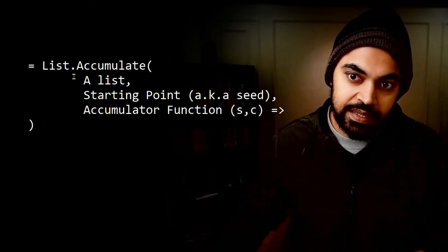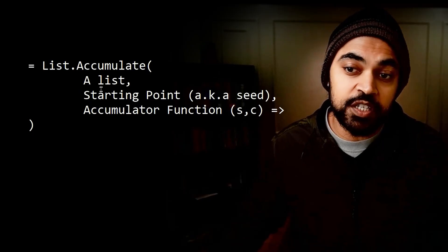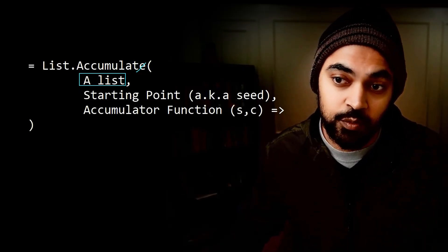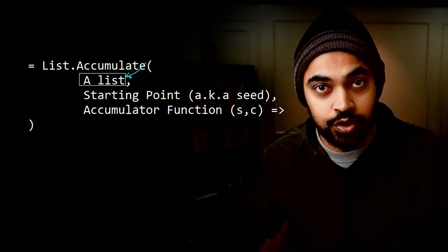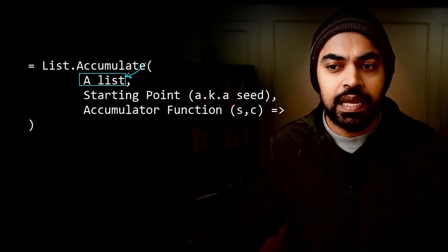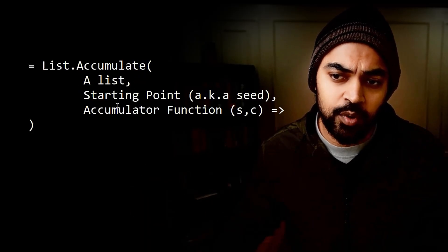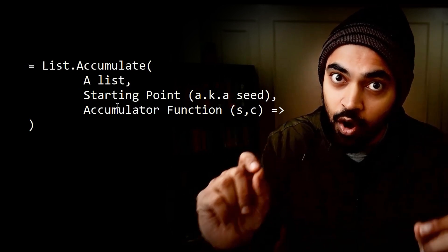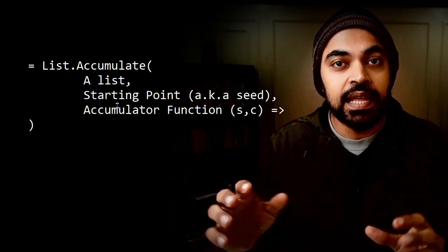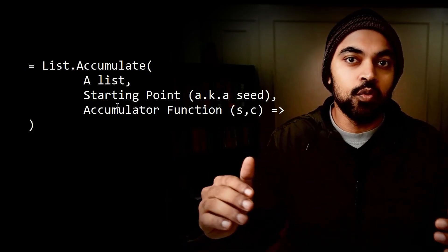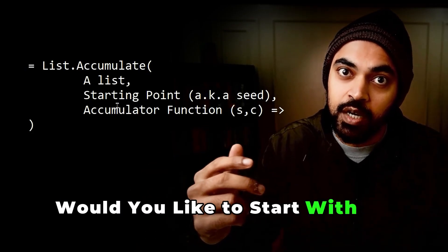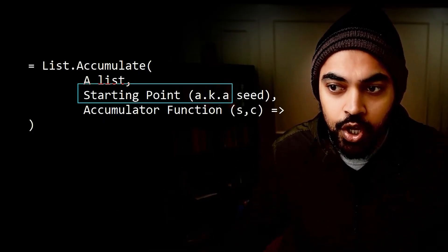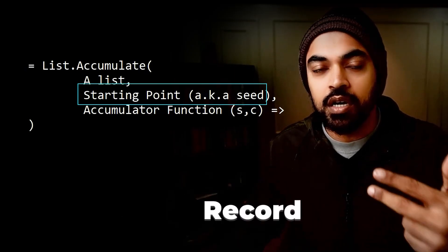List.Accumulate works like this. The first part of the function is the list you're trying to work with — whatever list you're trying to accumulate through. Then you provide a starting point, which is the starting point of the accumulation, not of the list. That means: would you like to start with an empty string, an empty table, an empty record? In the starting point you can input a list, a table, a record, or an empty string — whatever that might be.